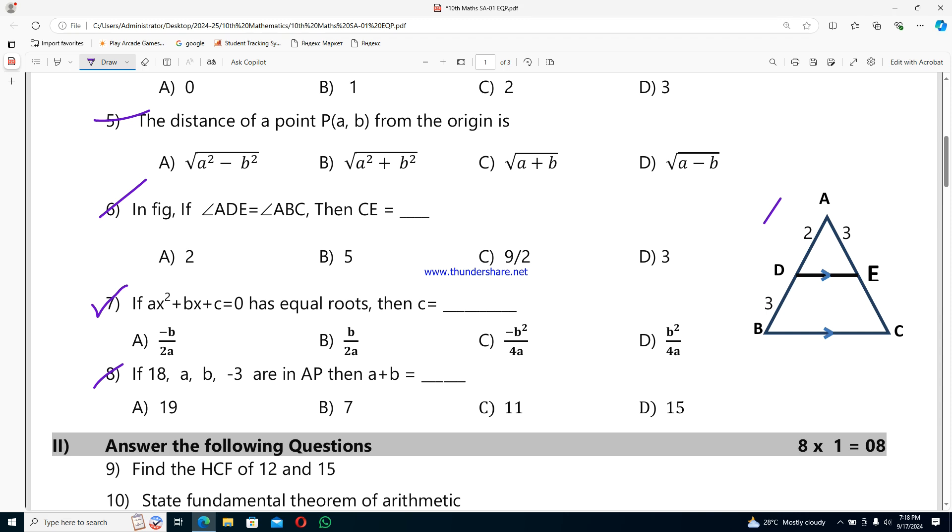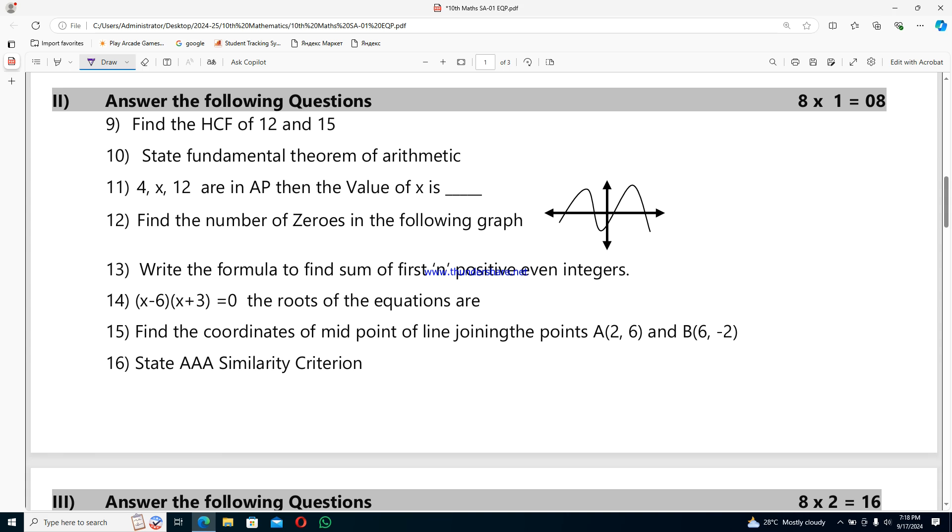Eighth question: if 18, a, b, -3 are in AP, then a+b equals option A 19, option B 7, option C 11, and option D 15. Now second row for total 8 marks.